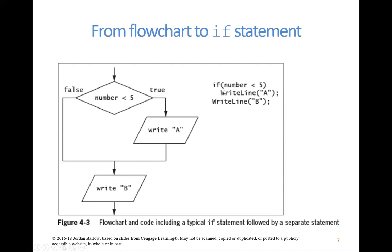In the code, we have the keyword if followed by parentheses. Inside the parentheses is the control statement — a statement that can be evaluated as true or false. C-sharp evaluates whether the number is less than 5; if it is, this evaluates as true, and if not, as false. If the control statement is true, the computer executes whatever follows the if statement — in this case, the block containing write line A. Write line B is outside the if block. I don't love that this textbook example omits curly braces — it's valid C-sharp, but best practice is to always include them, even for a single statement.